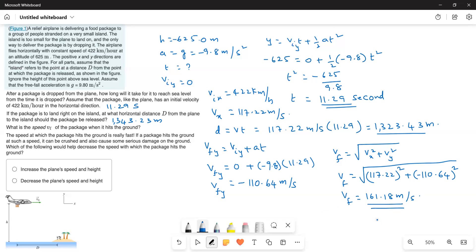And then this is the value 161.18 meters per second. Now, the final bit, the speed at which the package hits the ground is really fast. If a package hits the ground at such a speed, it can be crushed and also cause some serious damage on the ground. Which of the following would help decrease the speed with which the package hits the ground?